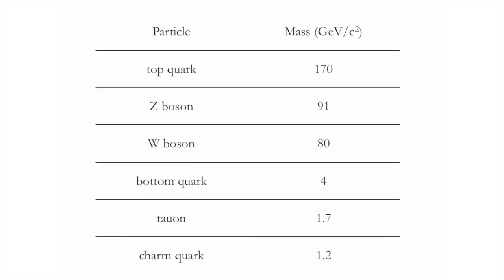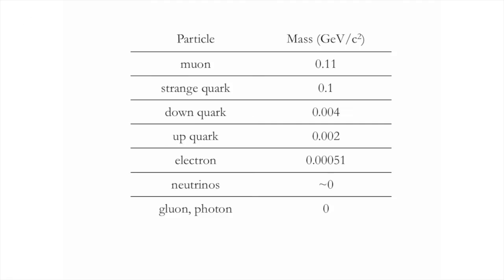The heaviest partner of the electron is the tauon, with a mass of 1.7 GeV/c², just a little heavier than the charm quark at 1.2. The next heaviest particle is the muon, followed by the strange quark, the down quark, the up quark, and then the electron. In these units, the electron mass is 0.00051 GeV/c². The next lightest particles are the neutrinos — their mass is very light, nearly zero for our purposes. Finally, the gluon and the photon are exactly massless particles. There's quite a large spread in masses: the top quark mass is about 10⁵ times the up quark mass, a factor of 100,000.